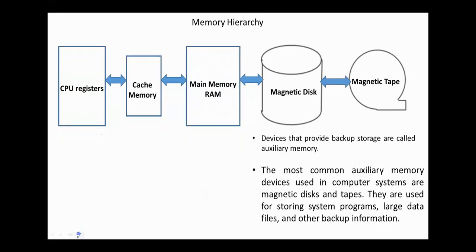The next memory in the hierarchy is the auxiliary memory that includes magnetic disks, optical disks, and magnetic tapes. The most common auxiliary memory devices used in computer systems are magnetic disks and magnetic tapes. They are used for storing system programs, large data files, and other backup information.